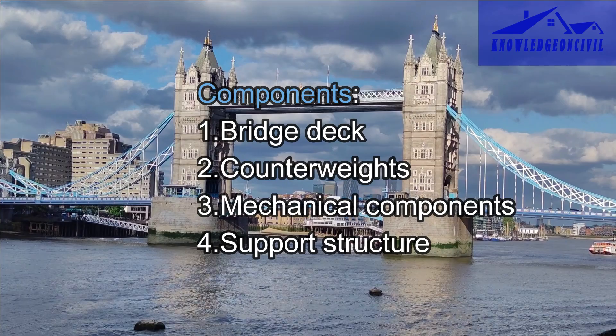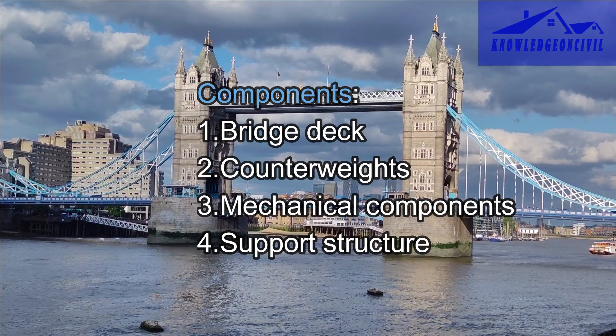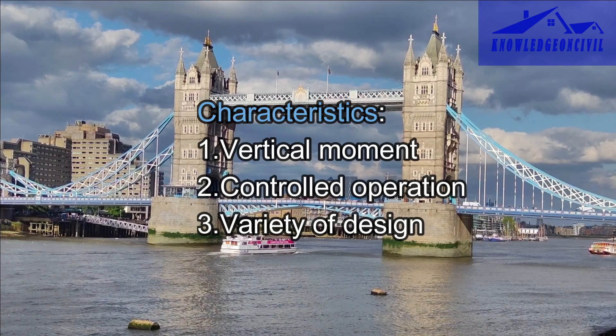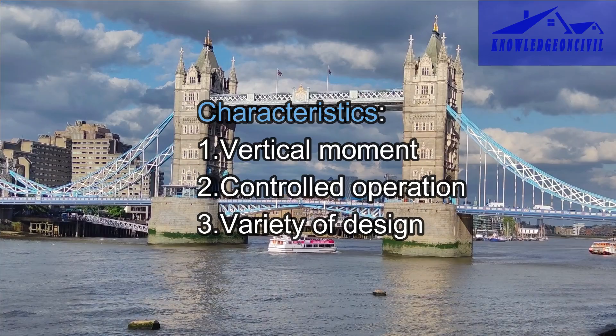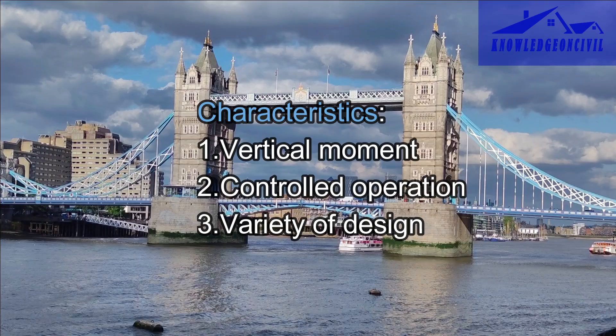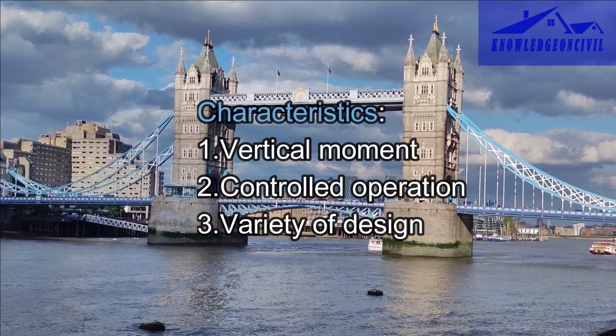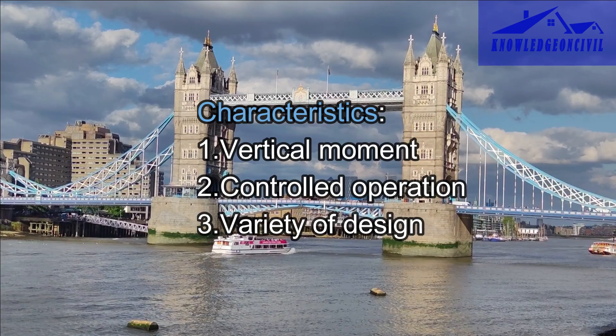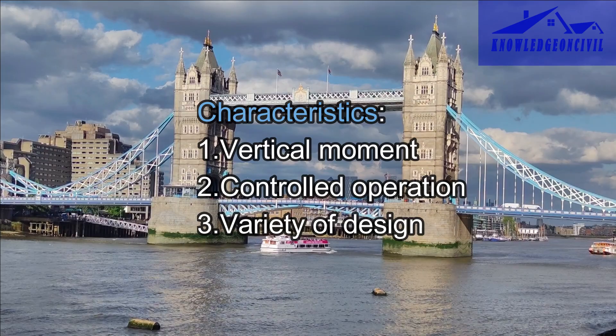Movable bridges have a support structure that can include towers, piers, or other elements that provide stability and guide the movement of the bridge. The defining characteristic is the ability to move vertically — the bridge deck can be raised or tilted, creating an open channel for boats and ships. They are operated by bridge tenders or operators who receive requests from marine traffic to open or close the bridge, with operation carefully controlled to ensure safety. Movable bridges come in various designs including bascule bridges, swing bridges, vertical lift bridges, and lift span bridges, each with its own unique mechanism for opening and closing.